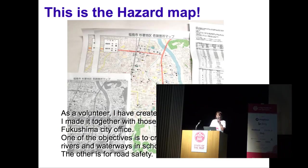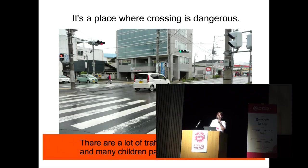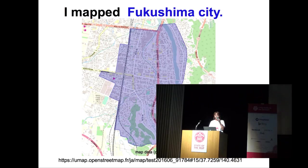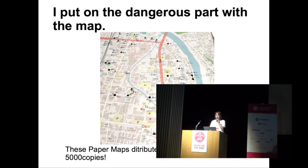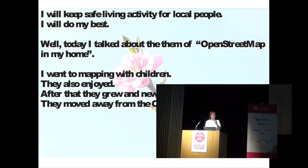One of the objectives is to create attention signs for rivers and waterways in school areas. The other is for road safety. This picture shows a dangerous riverside. We need sign boards to protect from danger — it's a place where crossing is dangerous, with heavy traffic and many children passing. Then I mapped Fukushima City, putting the dangerous paths on the map and introducing the dangerous path map to everyone at the elementary school.